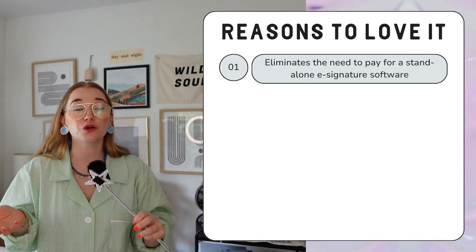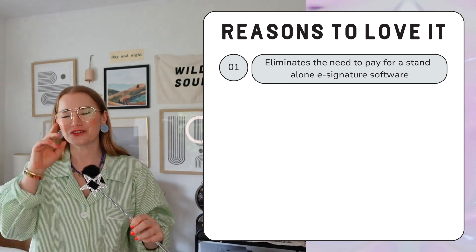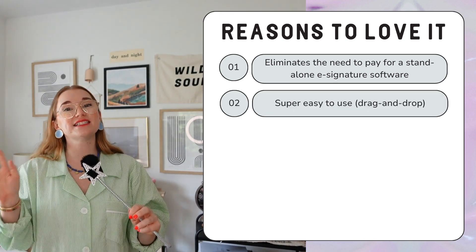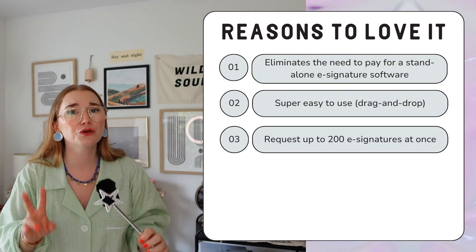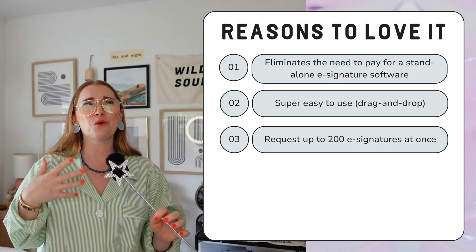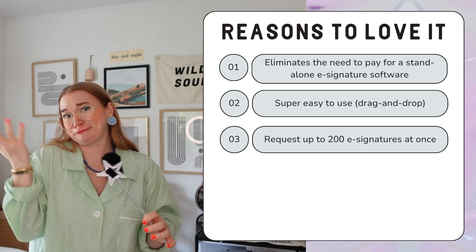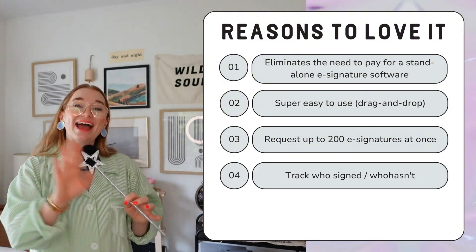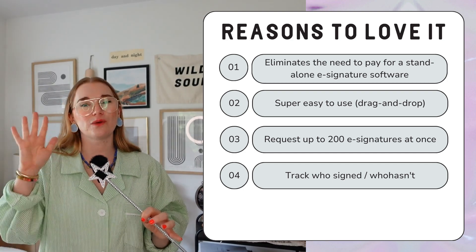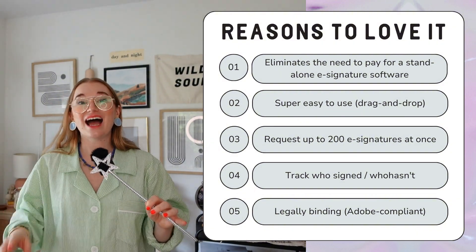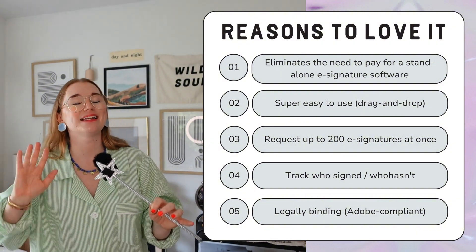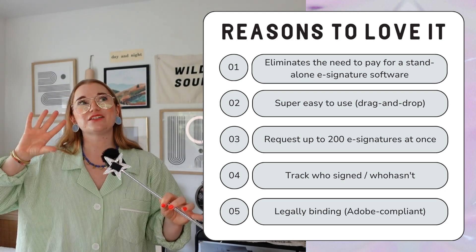Why do I like it? First, it eliminates the need to pay for a standalone e-signature service like DocuSign. Second, it's super easy to use — literally drag and drop, just so simple. You can request up to 200 email signatures at once. You can easily track who has and hasn't signed right from the document. And it's a legally binding document — they follow Adobe's compliance standards. I'll share more about how it's legally binding at the end of the video, but for now let's see how it works.